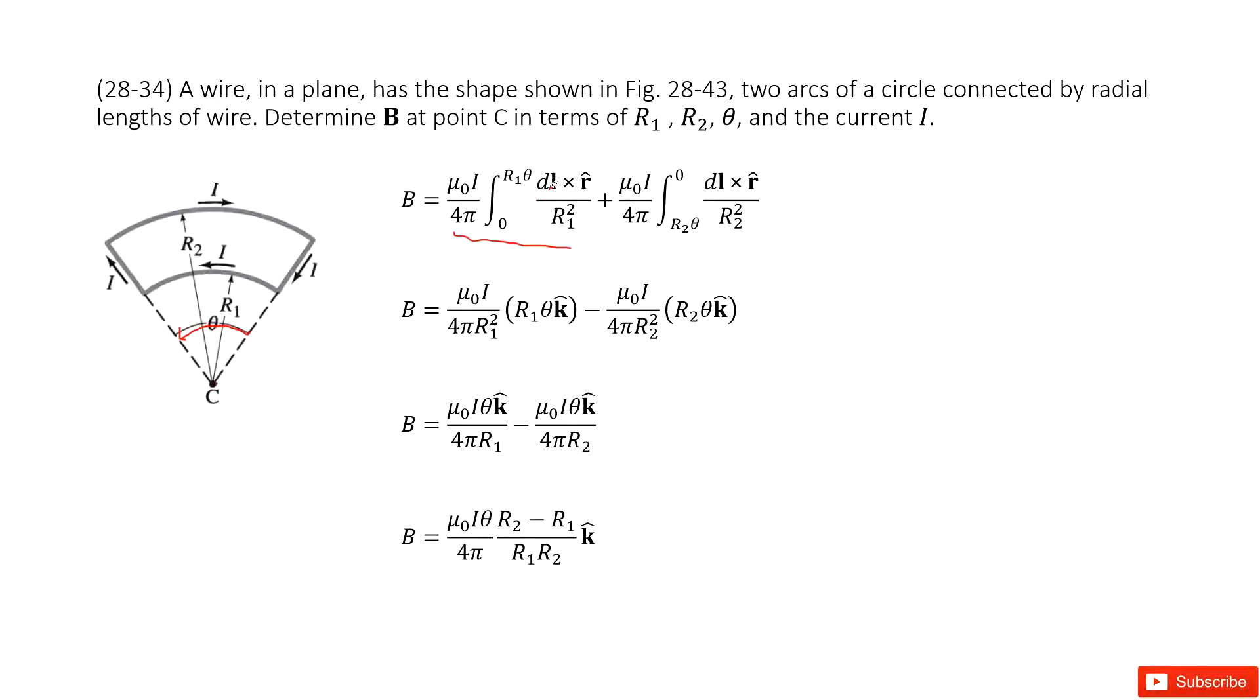And then how do we integrate the length for DL? You can say DL is the length for the small fraction for this arc. So we can say from zero to R1 times theta. This is the arc's length.